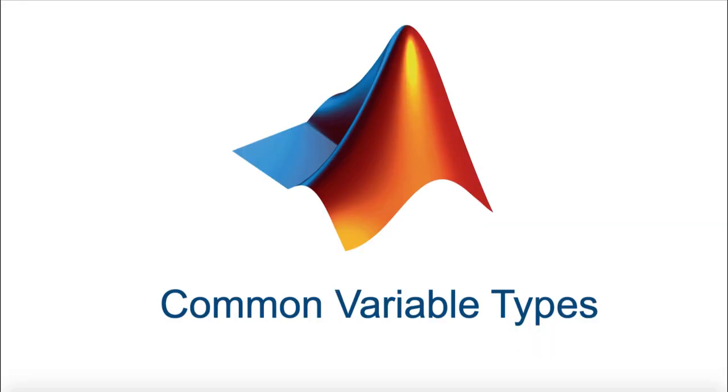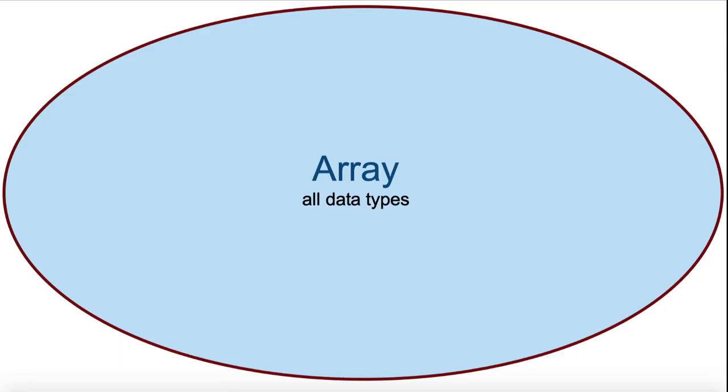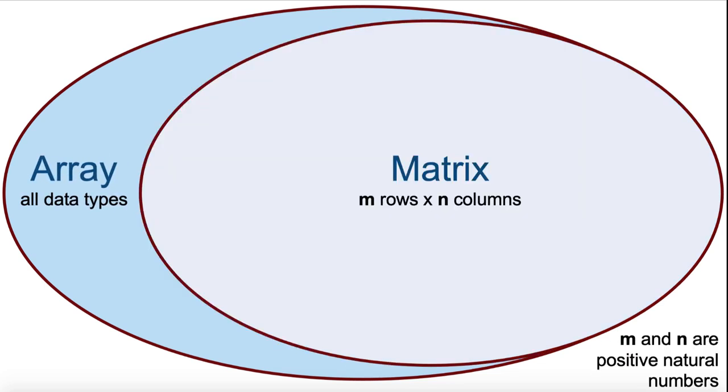Let's start this video by clarifying some commonly used variable types in MATLAB. An array is an all-encompassing term. All variables of all data types in MATLAB are multi-dimensional arrays. Within that definition, a two-dimensional array of numbers with multiple rows and multiple columns is called a matrix.